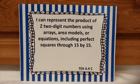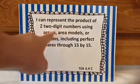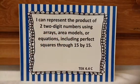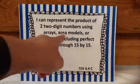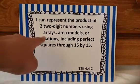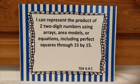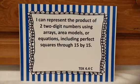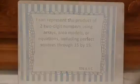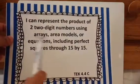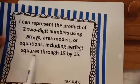So like 10 times 10, 11 times 11, 12 times 12, using arrays which are the rows and the columns, area models which is very similar to that, or equations including perfect squares through 15 by 15. I will explain in detail what a perfect square is in this video and I'm also going to show you how to find factors in order to understand what a perfect square is. So let's get started — it's important that you understand arrays, perfect squares, factors, and products. I'm going to show you how to make arrays, and in those arrays I will show you perfect squares. Then from there we'll talk about area models and equations.